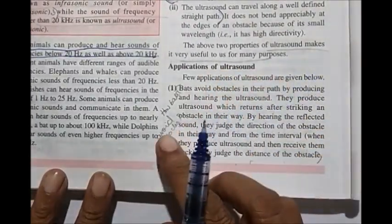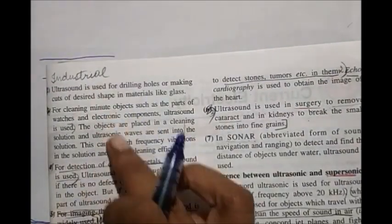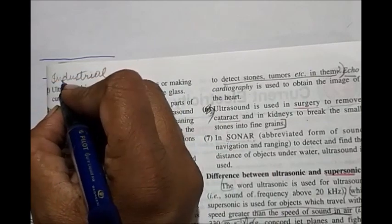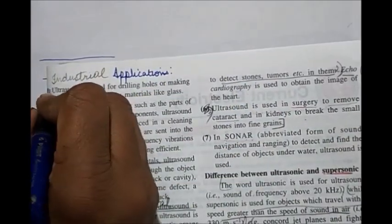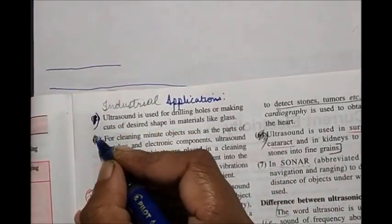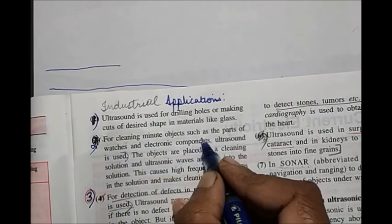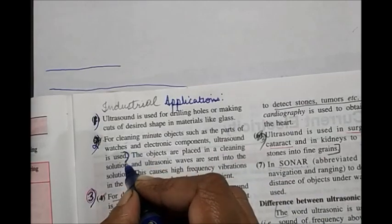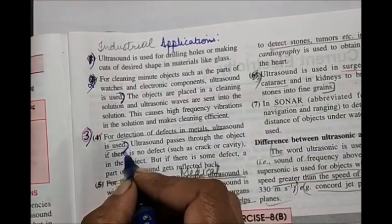Now coming to applications of ultrasound. First: how bats avoid obstacles using ultrasound — you had an exercise question based on this. These three are industrial applications. Point one and two: for cleansing minute objects such as parts of watches and electronic components, ultrasound is used. Point three: in detection of defects in metals, ultrasound is used.